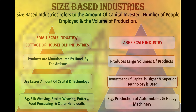Now according to size, industries are of two types: small and large scale industry. Small scale industries are called cottage or household industry. Products are manufactured by hand. A less amount of capital and technology is needed for this type of industry. For example silk weaving, basket weaving, etc.